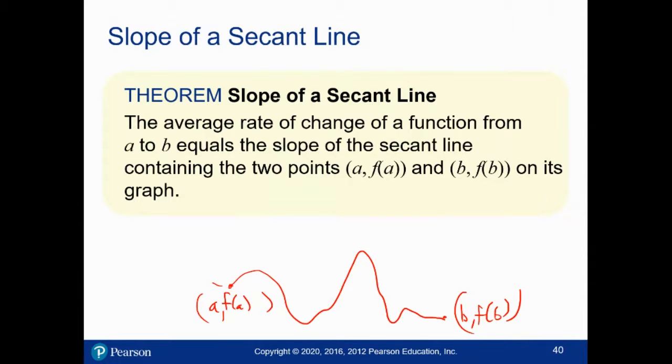If I draw the line connecting these two points, the slope of this line would be F of B minus F of A over B minus A, and that's exactly the average rate of change. So the average rate of change of a function on an interval is the slope of the line connecting the end points of that interval.